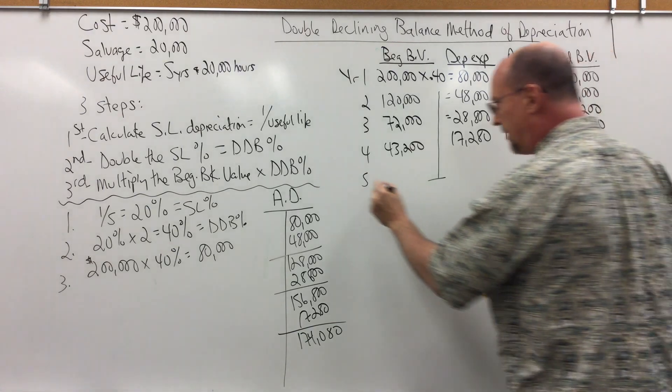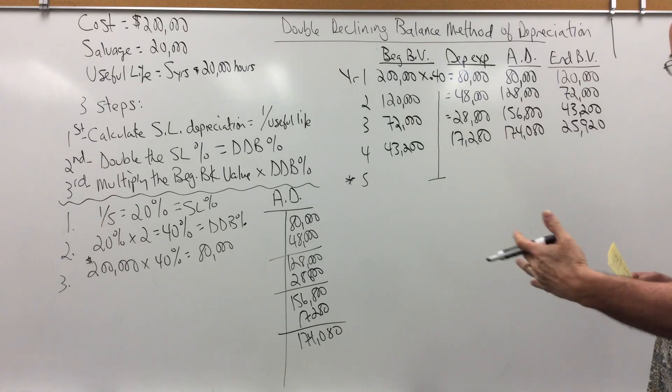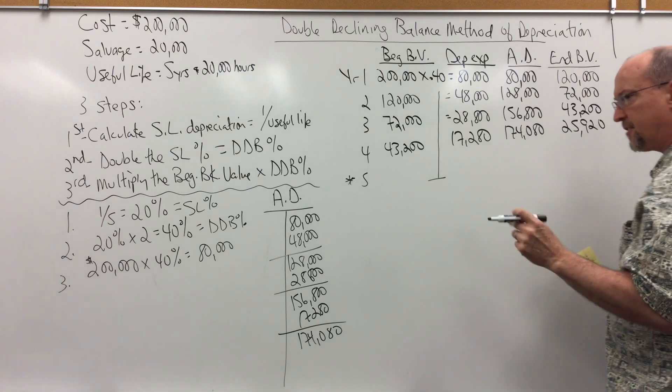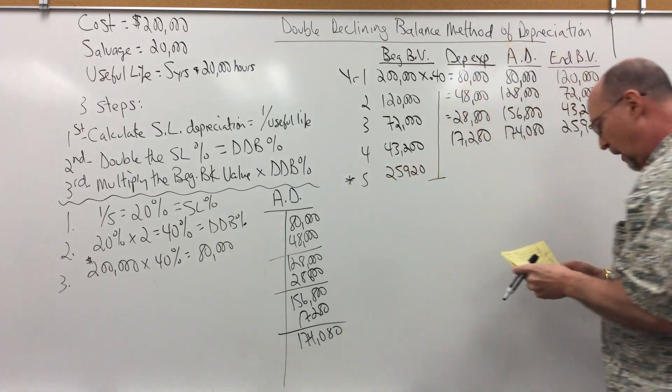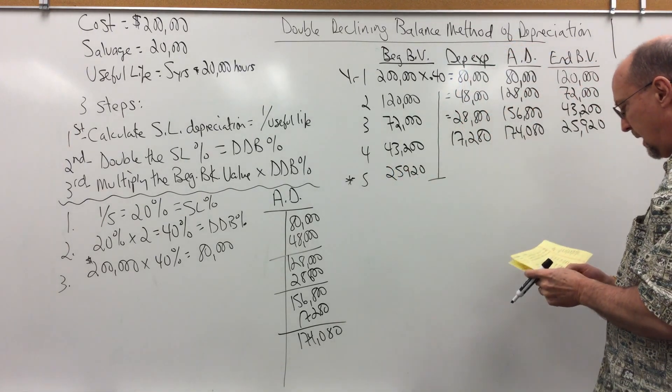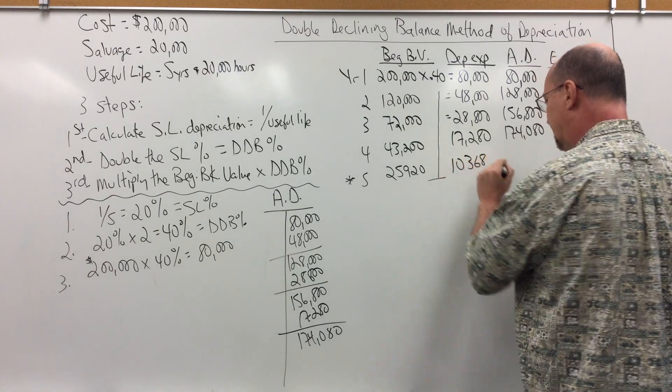Now, we got to watch out in the last year or two that we don't go over the salvage value, or past the salvage value. So, 25,920. If I were to multiply that times 0.4, that would give me 10,368.